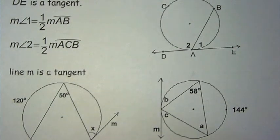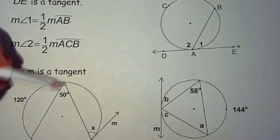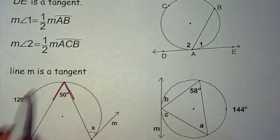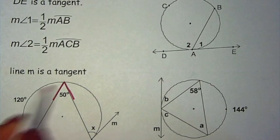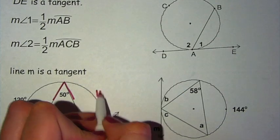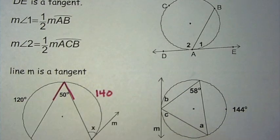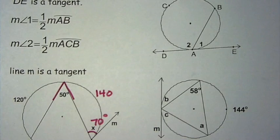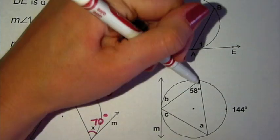So in the first example, you have a circle and you have an inscribed angle that's 50 degrees. So that makes the arc that it intercepts equal to 100 degrees. Then all the arcs in a circle need to add up to 360. So 360 minus 120 minus 100 equals 140. Since that arc is 140, half of that is 70 degrees, so x is 70.